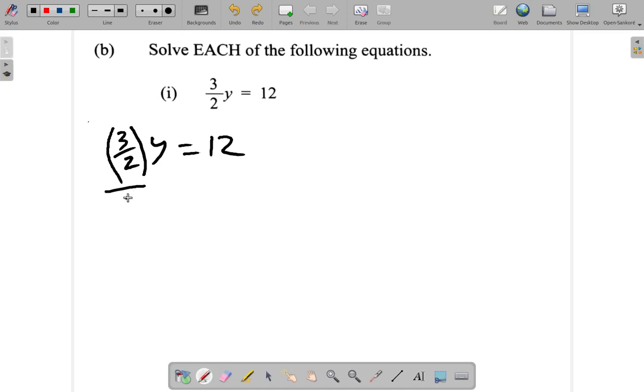What I'll do here is divide by 3 over 2. 3 over 2 cancels 3 over 2, or 3 halves cancels 3 halves. So we're left with y equal. We must divide by the same thing over here, 3 halves.